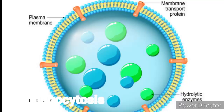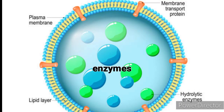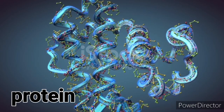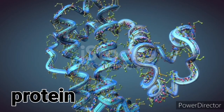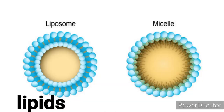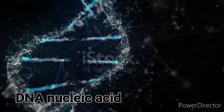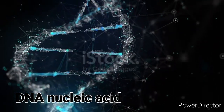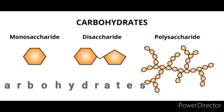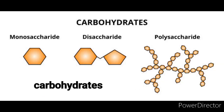These enzymes function optimally in the acidic environment inside lysosomes, where they degrade macromolecules such as proteins, lipids, nucleic acids, and carbohydrates into smaller components that the cell can reuse for energy production or building new molecules.